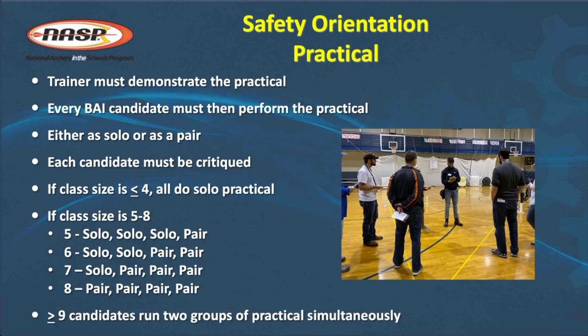But if you have nine or more, you're going to have to subdivide your range into two ranges with two groups — one candidate peer teaching to half the class while another candidate peer teaches the other half. Obviously you can only be in one place critiquing, so if you have a co-instructor — even a BAI — that's great. If you don't have a co-instructor, then one of the candidates will serve as a critiquer using their notes to make sure their peer gets everything right, and then they will switch at some point during the lineup.